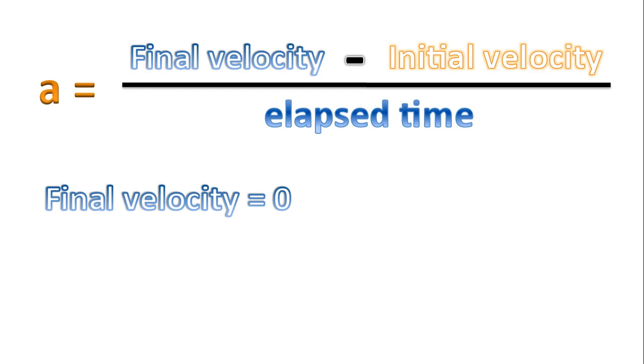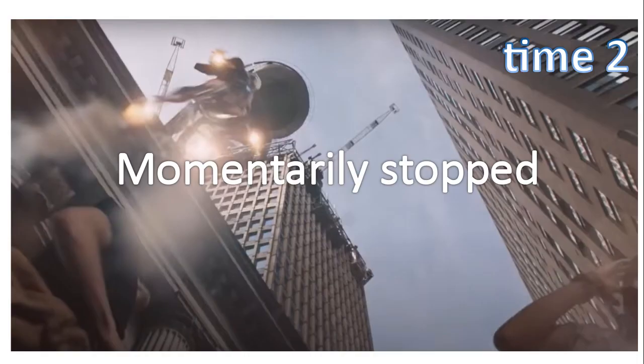So his final velocity is zero. Why is that? Well, we've defined the final time, time two, as being this point where he momentarily comes to a stop.